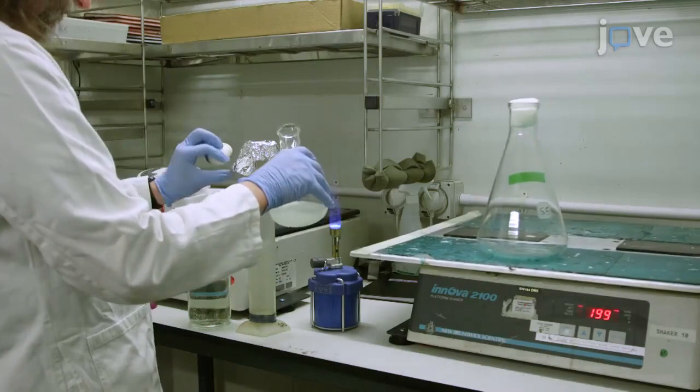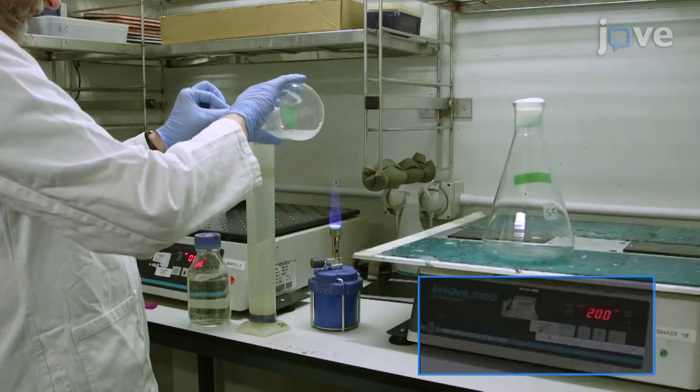To begin this procedure, grow yeast in YMM medium to an OD600 between 0.6 and 0.8.